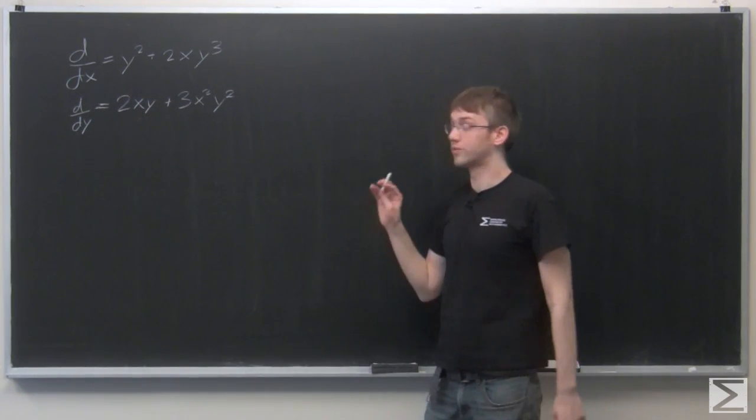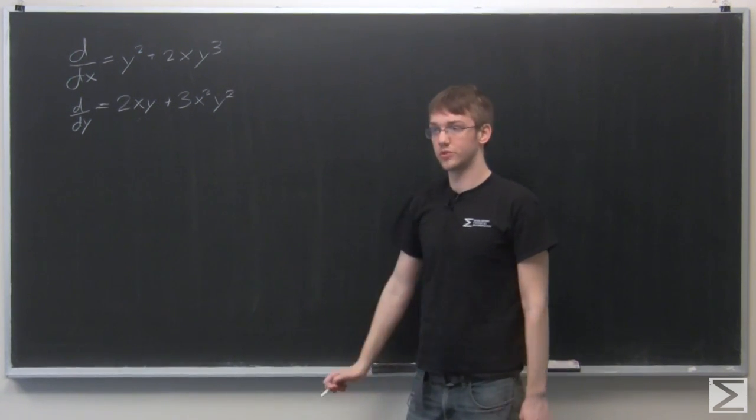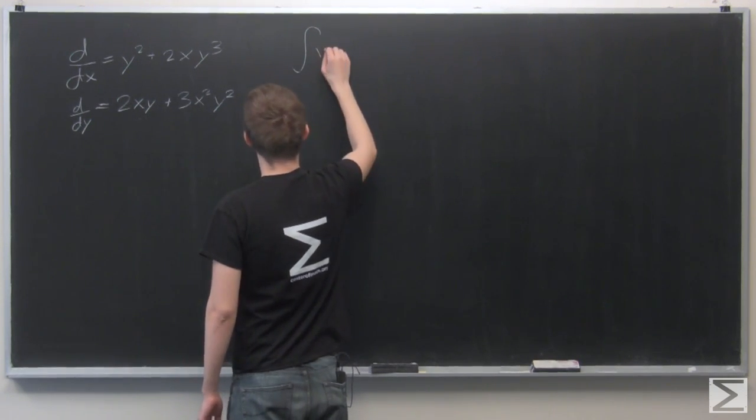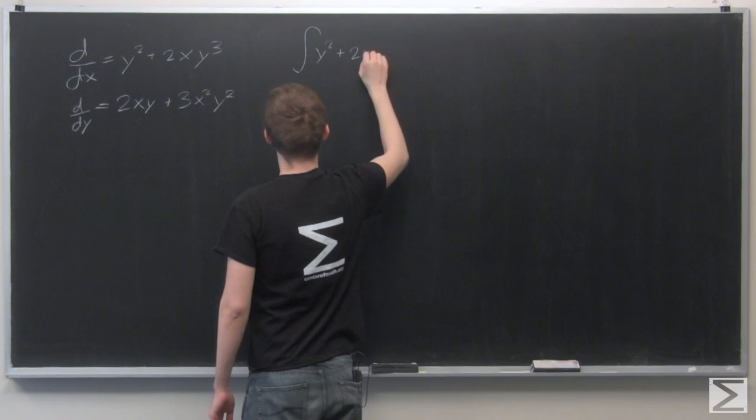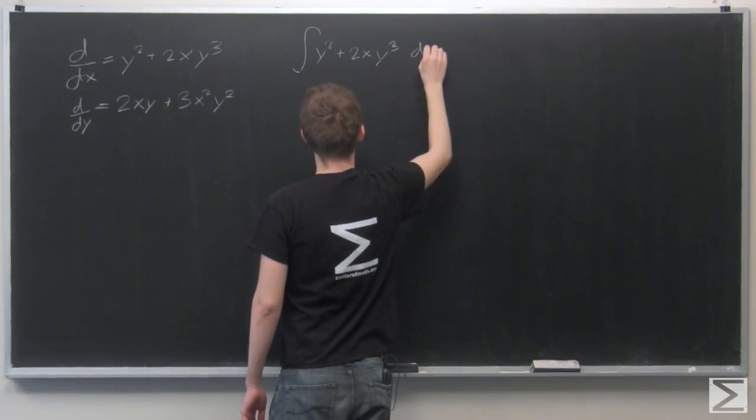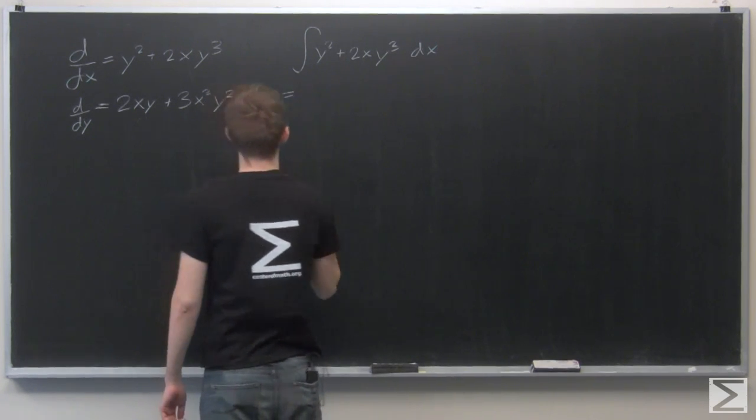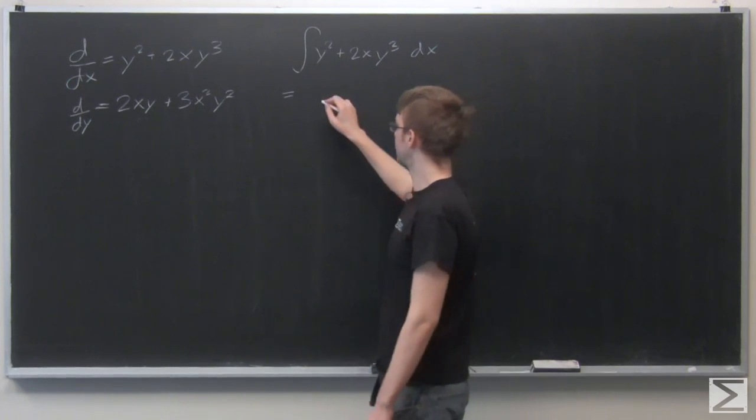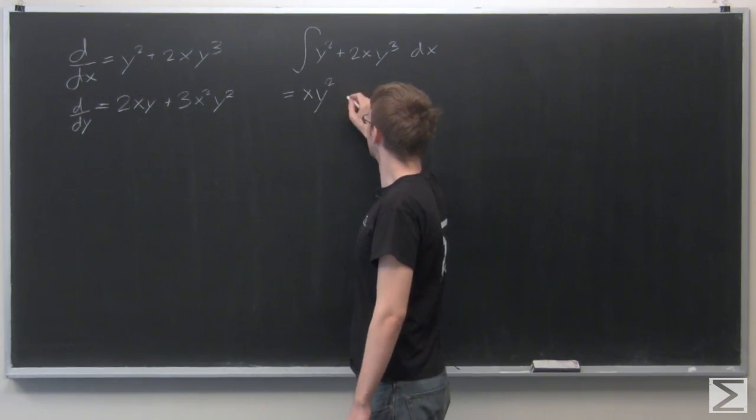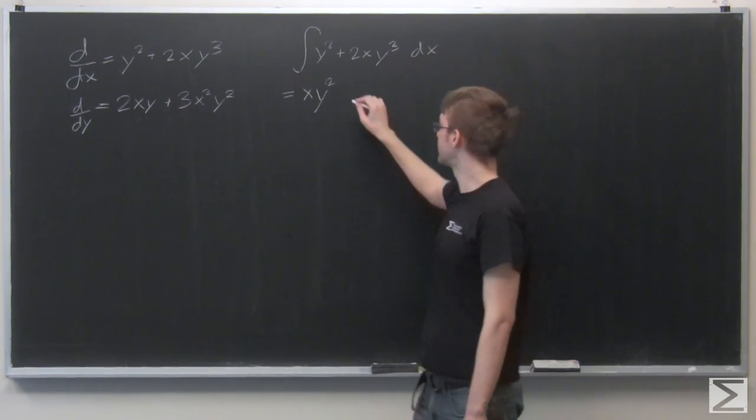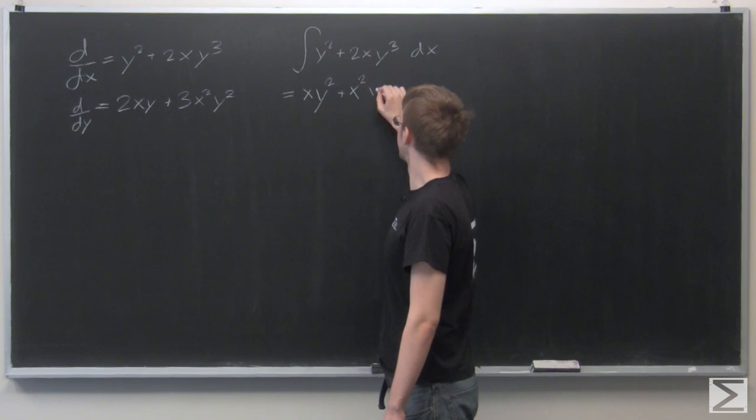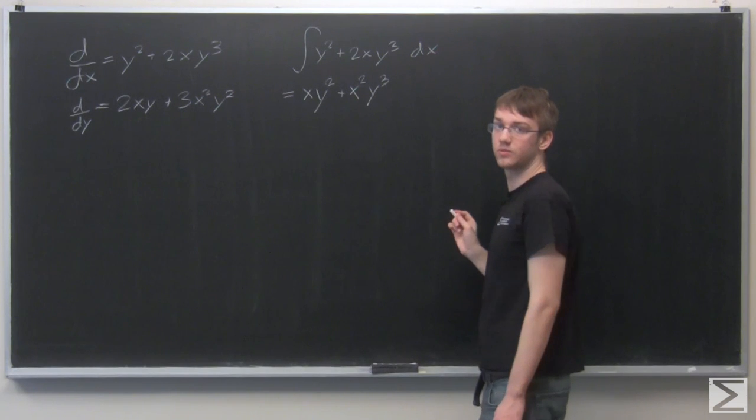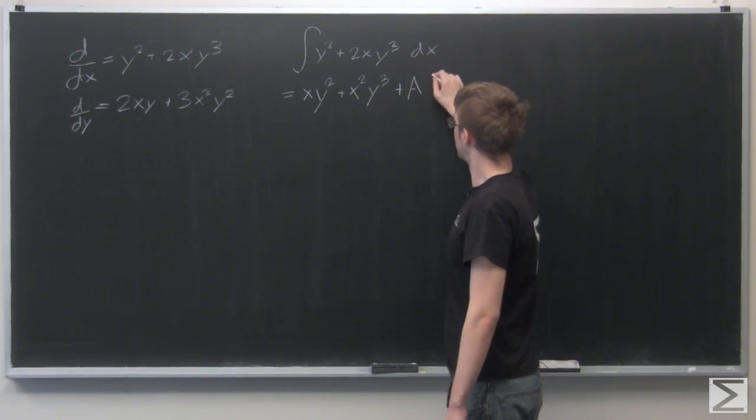Now what we want to do to solve this is we're first going to integrate the x component with respect to x. So because y squared doesn't have any x's in it, we just treat that as a constant, and that becomes xy squared. And the second term becomes x squared y cubed. And now, because we only integrated with respect to x, we have an extra function of y.